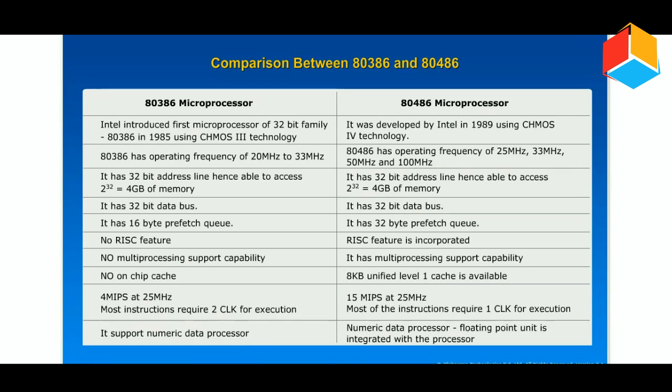The 80386 has no on-chip cache. The 80486 has an 8KB unified Level 1 cache available.